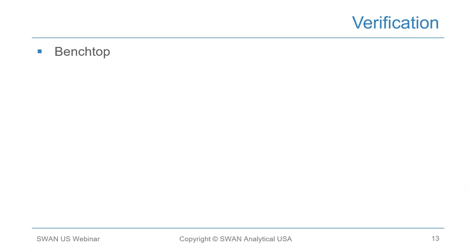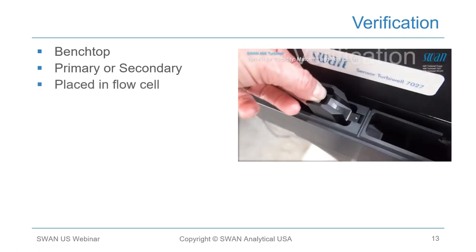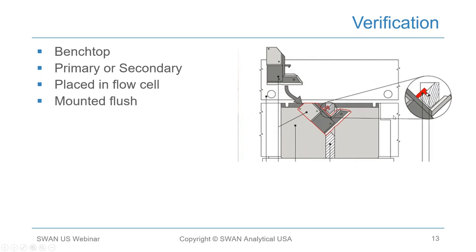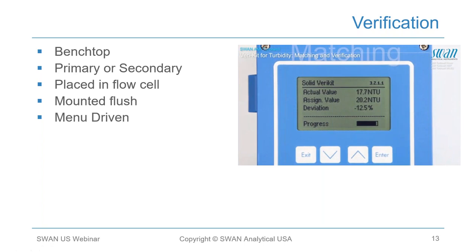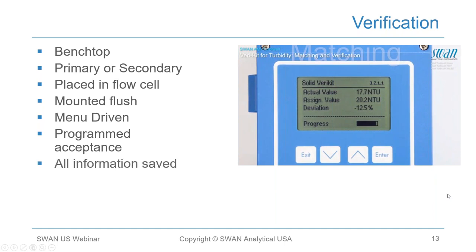For verification, a bench-top comparison is possible — some states allow this with a 0.05 NTU window for samples less than 0.5 NTU. Swan provides a primary or secondary standard verification kit that is accurate and simple to use. The verification kit is placed in the flow cell via an attachment with a small pin that holds it flush, preventing bouncing. The process is menu-driven, walking you through each step with factory-programmed acceptance criteria showing progress. All information is stored so you can show your regulatory body during plant inspections.